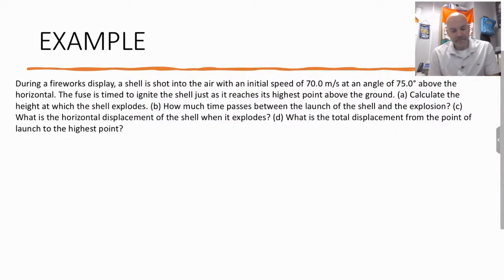So we have a fireworks display shooting at initial speed, so here's our initial velocity, 70 meters per second at an angle of 75 degrees. It's timed just for the fuse to ignite the shell just above the highest point. And we're going to find: (a) Calculate the height at which the shell explodes. (b) How much time passes between the launch of the shell and the explosion. (c) What is the horizontal displacement of the shell when it explodes? And (d) What is the total displacement from the point of launch to the highest point?